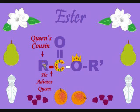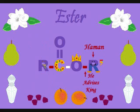The R group bonded to the C is our new queen's cousin, Mordecai. He took care of her and advised her after her parents died. You could think R for relative or R for advisor. It doesn't really matter what Mordecai looks like — any R group will do. The king has his own advisor, Haman, which we can call R group prime. Once again, any R group will do. But Haman would like his R group to be prime, while Mordecai's is regular, since that's just the sort of man he was.